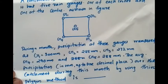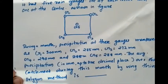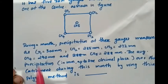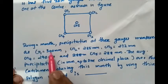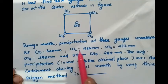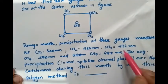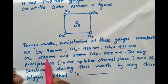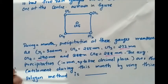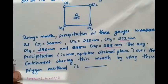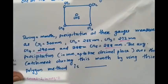The recorded precipitation at these gauges is: G1 = 300 mm, G2 = 285 mm, G3 = 272 mm, G4 = 290 mm, and G5 = 288 mm. The question asks for the average precipitation in mm over the catchment during the month using the Tyson Polygon method.